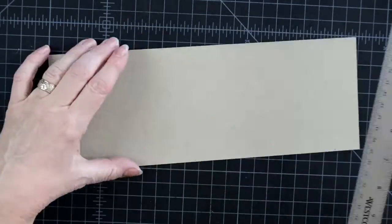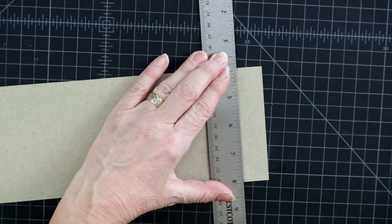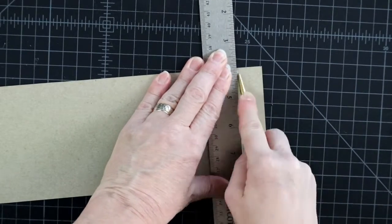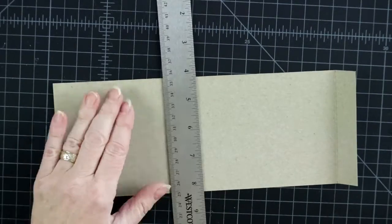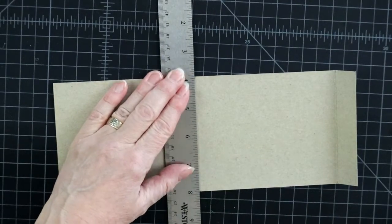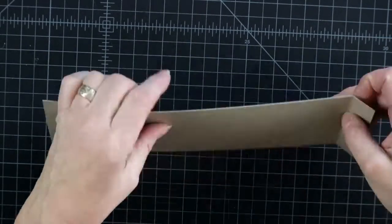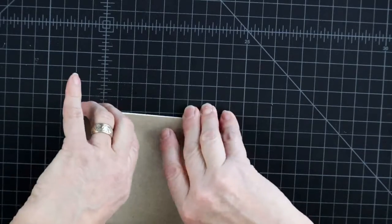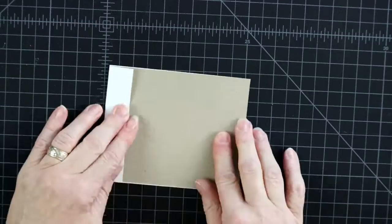Make a valley fold where the flap is, and a mountain fold in the middle. And make sure it all folds straight so the sides stay aligned.